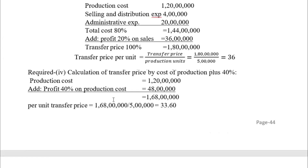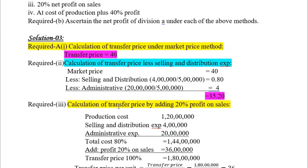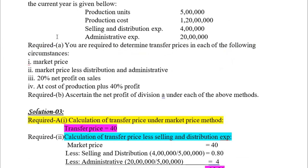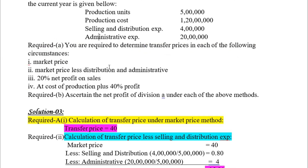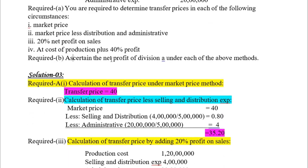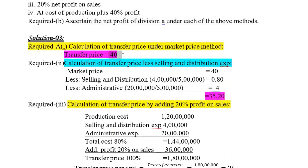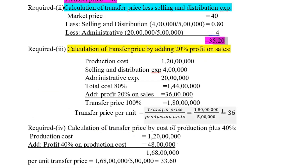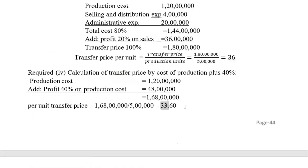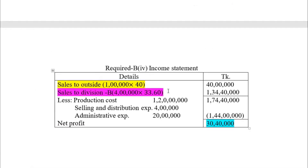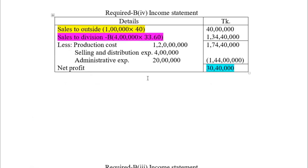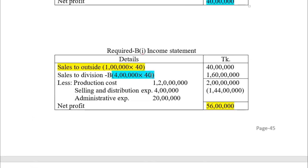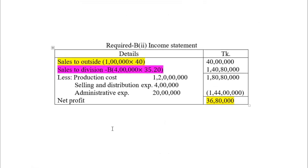In summary, for each method - market price, market price less expenses, and cost plus profit - we calculate the transfer price and then prepare the income statement to determine the net profit of each division. The income statement format covers all four methods to allow comparison.